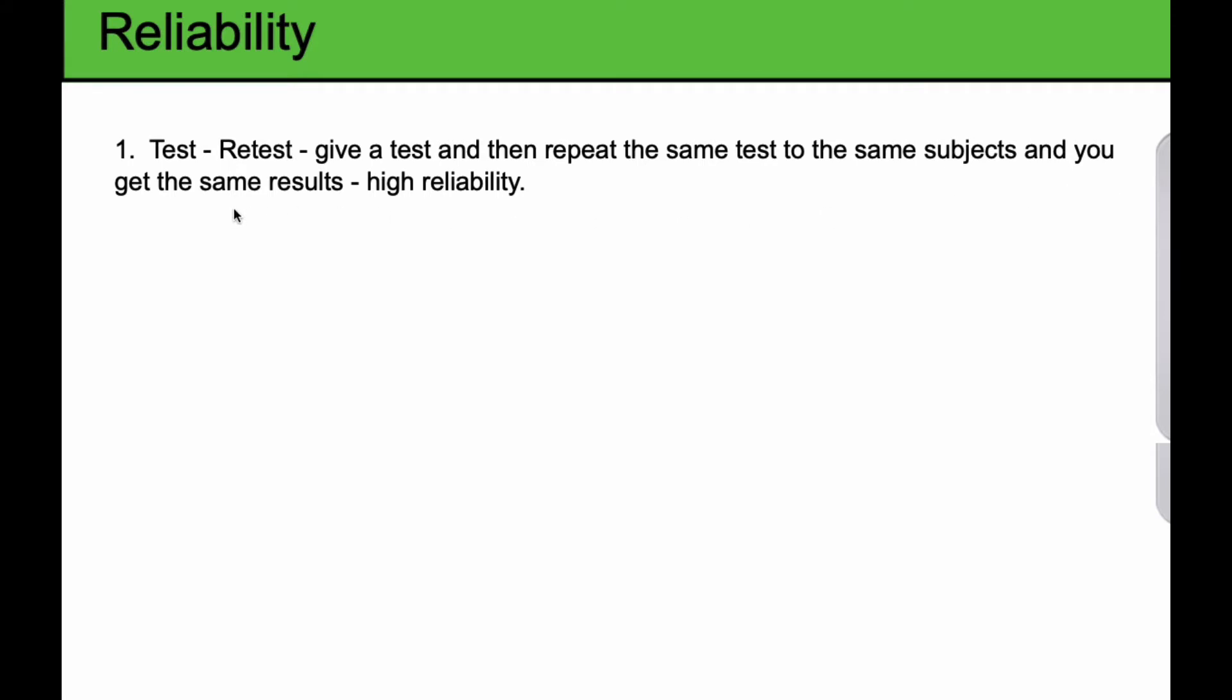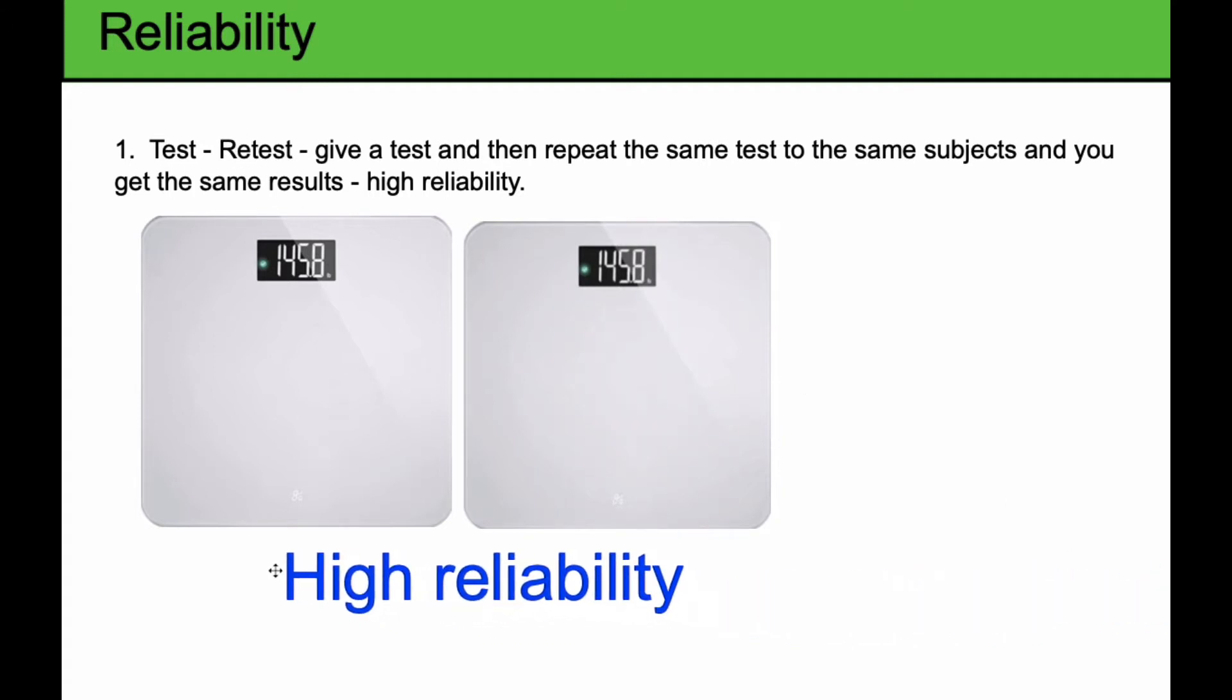You give a test and then repeat the same test to the same subjects. If it has high reliability, you get the same results, which is what we always desire. Consider this: in the morning I wake up and weigh myself on the bathroom scale, and I weigh 145.8 pounds. So there's my first test. If I get off the scale and step back on, if my result is exactly the same, then there's high reliability with this measuring device. If there's test-retest, I would say this is highly reliable.